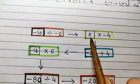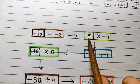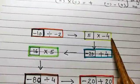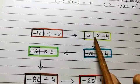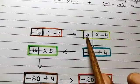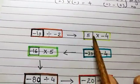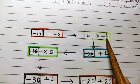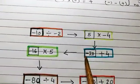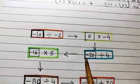Again, when this positive 5 is multiplied by negative 4, you will be getting negative 20. That is, whenever a positive integer is multiplied by a negative integer, you will be getting a negative result.